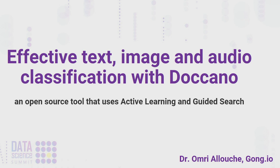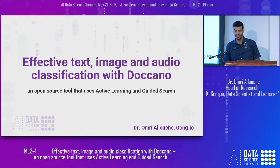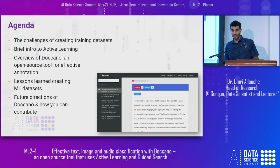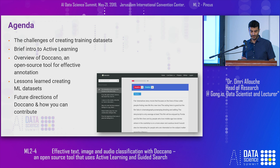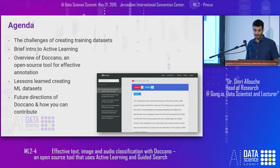Thank you all for being here. My name is Omri. I want to present today effective text classification, but also for image and audio data, using active learning and guided search. Briefly, I'm going to talk about the challenges of creating data sets, training and test, give a brief intro to active learning, overview an open source platform called Doccano that at Gong we extended and released today, and also lessons learned by creating machine learning models and future directions for the platform.